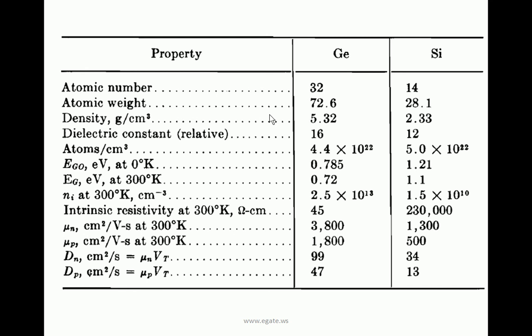Dielectric constant is also called relative permittivity. Atoms per centimeter cube is atomic concentration. Energy gap at 0 Kelvin: germanium is 0.785 electron volts, silicon is 1.21 electron volts. Energy gap at room temperature - as temperature increases, energy gap reduces.